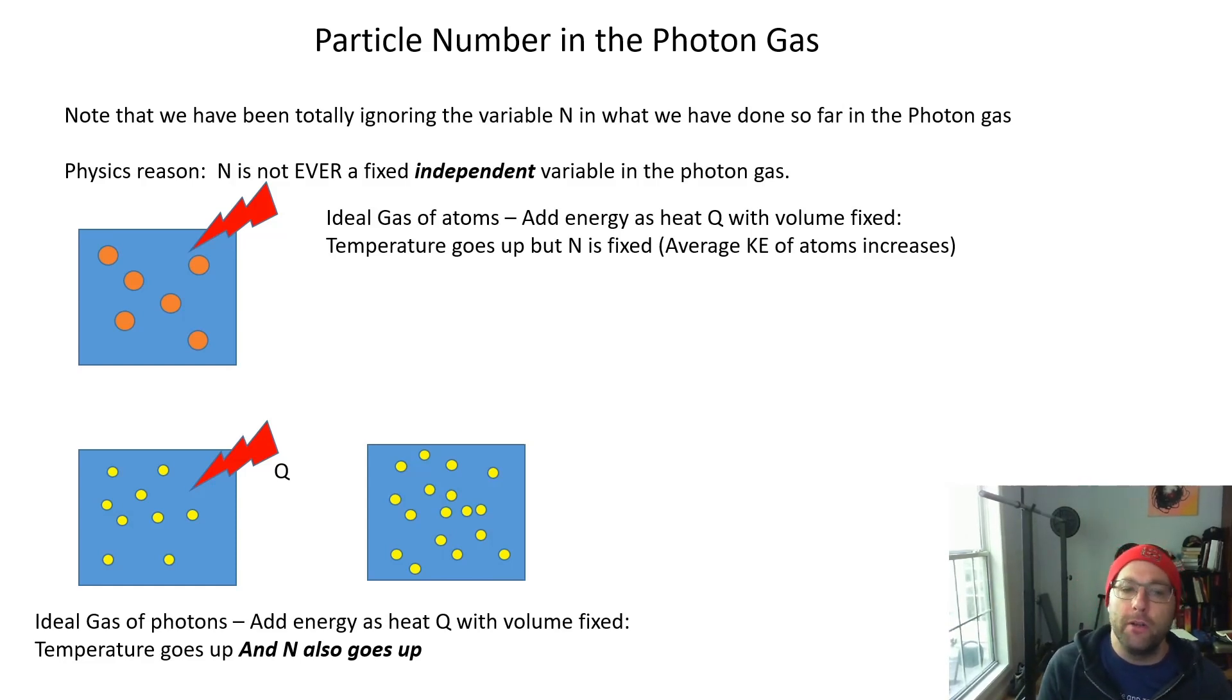Let's talk about the particle number issue because I keep saying it's weird. The basic idea is we've been completely ignoring N, and that's because N is not fixed. In order to be an independent variable, experimentally you need to be able to exert control over the variable. In an ideal gas of atoms, you can design an experiment where you put a fixed number of atoms—let's say a mole, 6 times 10 to the 23rd atoms—inside a box and do experiments on it. That N is almost always going to stay the same unless you're doing some kind of weird chemistry or poke a hole in the box.